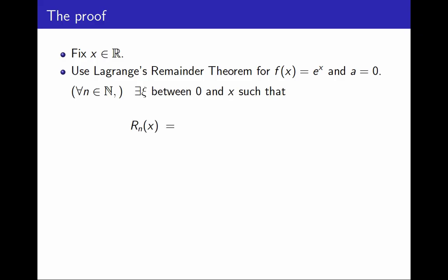If I use this theorem, I can conclude that there exists a number xi between 0 and x that allows me to write an explicit formula for the remainder. The remainder is equal to the n plus first derivative of the function at xi, over n plus 1 factorial, times x to the n plus 1.